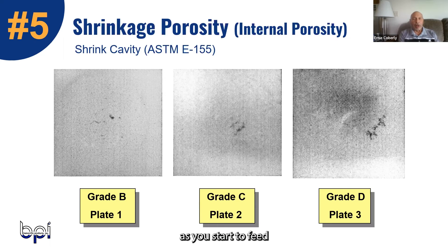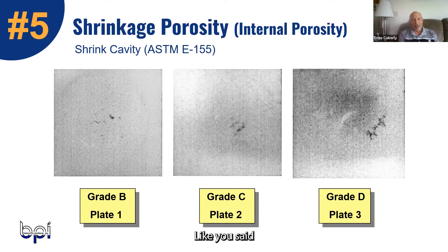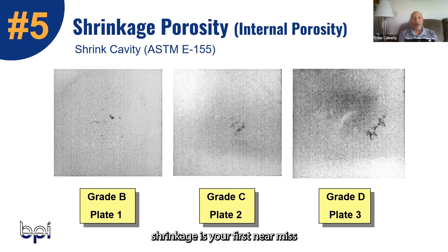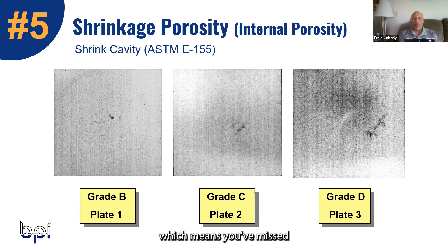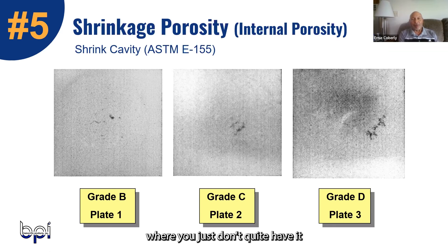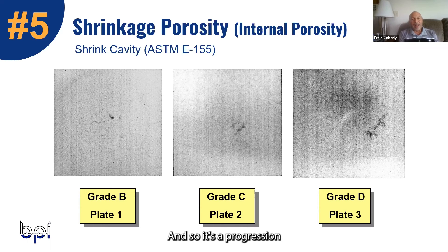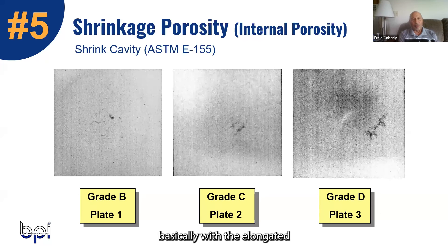It's a progression. As you feed through the risers, the elongated shrinkage is your first near-miss. Then it goes to sponge shrinkage, meaning you've missed your feeding range by just a little bit more. Then if you still don't quite have it, it goes to a shrinkage cavity.